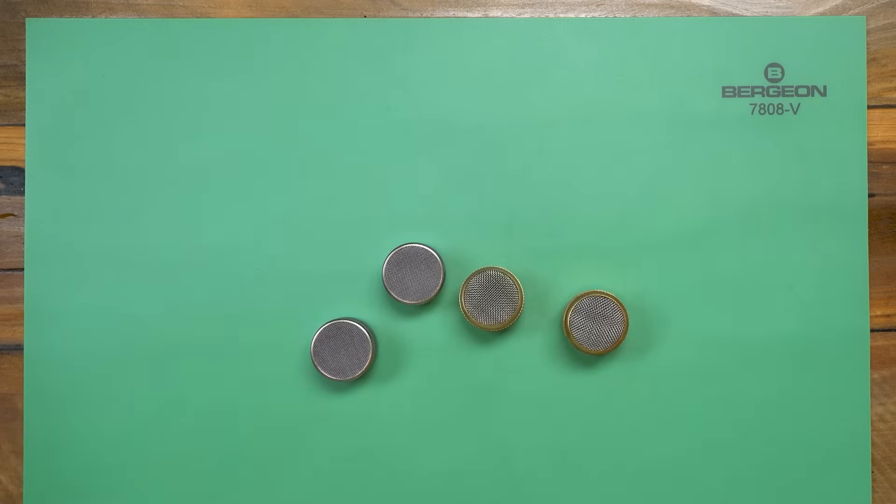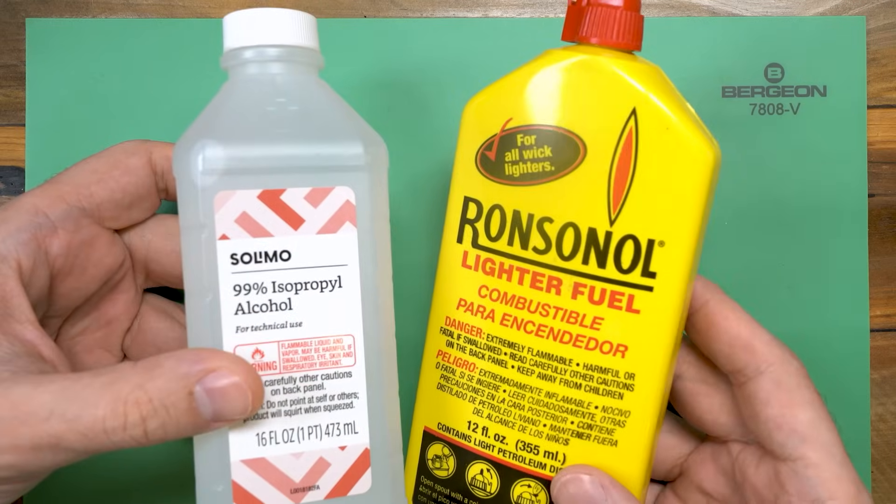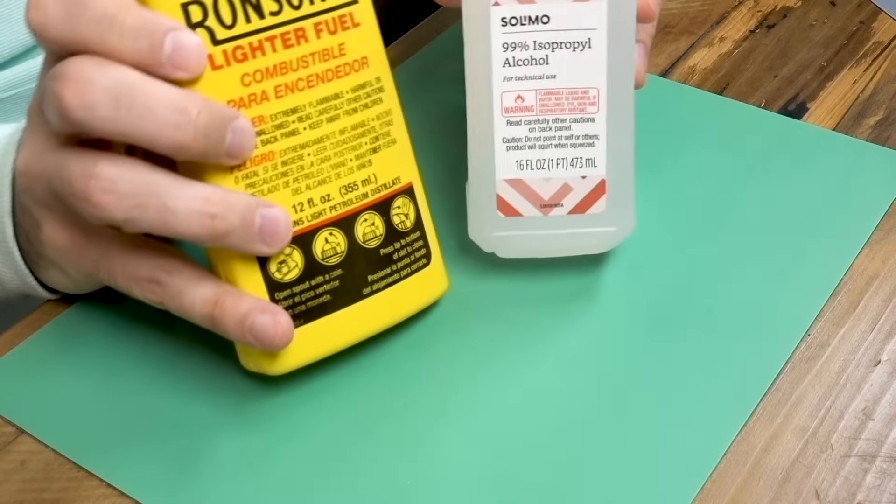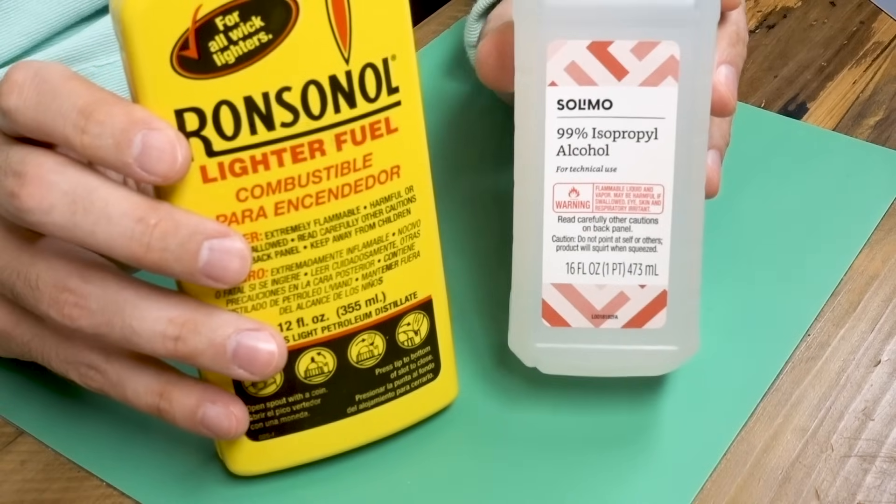You'll also need some consumables to clean the watch movement, things like isopropyl alcohol and lighter fluid, but those are relatively inexpensive and you can figure those out at the local grocery store.